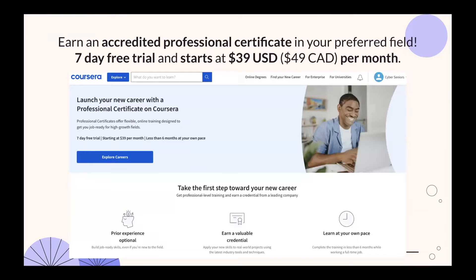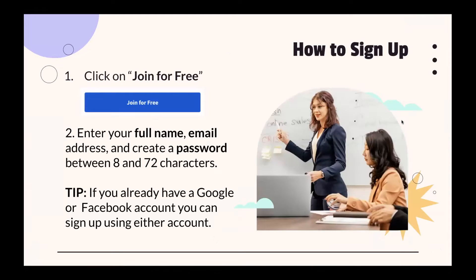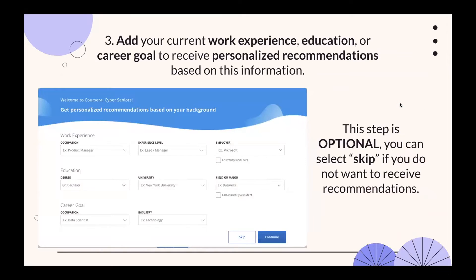To sign up and enroll: on the website there's a button saying 'Join for Free.' Click that and it will ask for your full name, email address, and a password between 8 and 72 characters. If you already have a Google or Facebook account, you can sign up using those. You can also add your current work experience, education, or career goal to receive personalized recommendations — this step is optional.